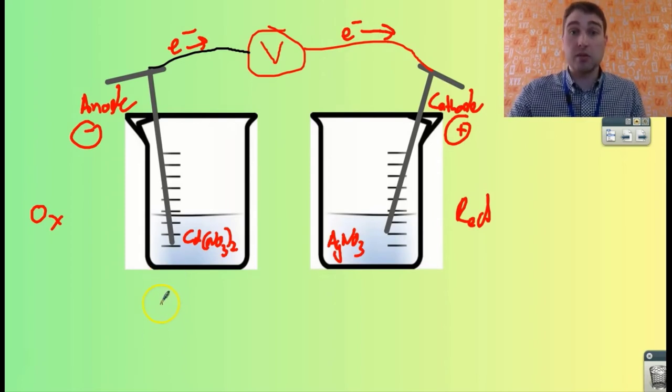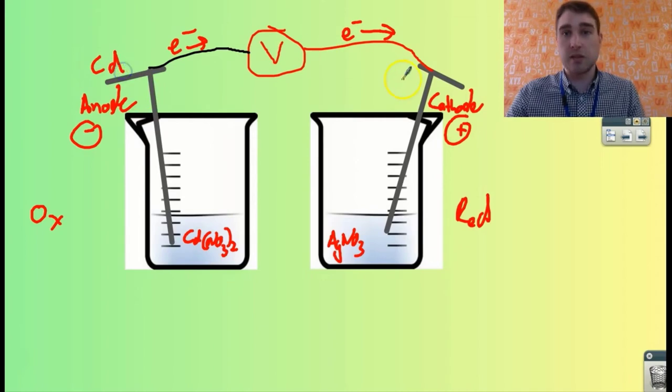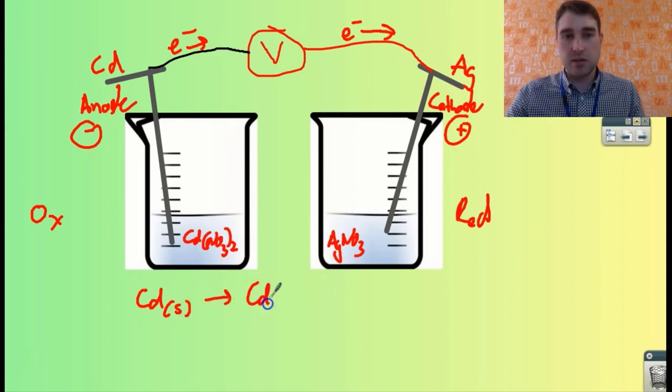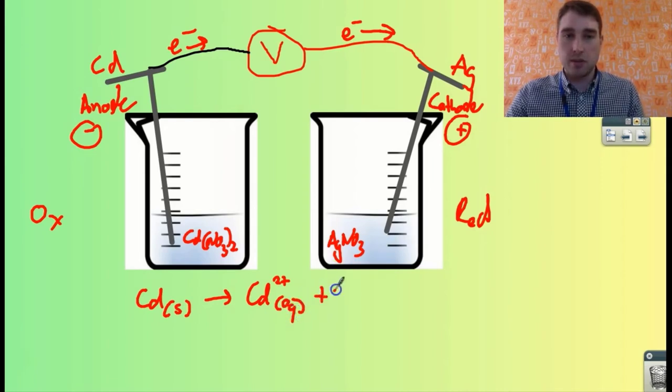Now we can write our half-equations. Our cadmium rod - the rod there is made out of cadmium. Over here we have our silver rod. The cadmium is being oxidized, so oxidation is loss. Solid cadmium goes to cadmium ions, Cd²⁺ aqueous, plus two electrons - it's losing the electrons.